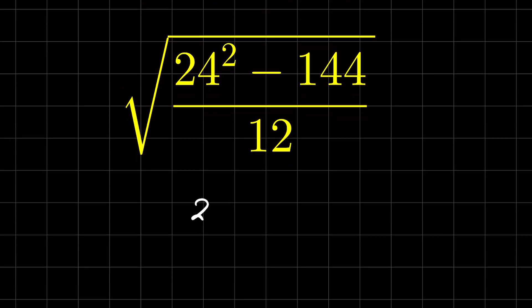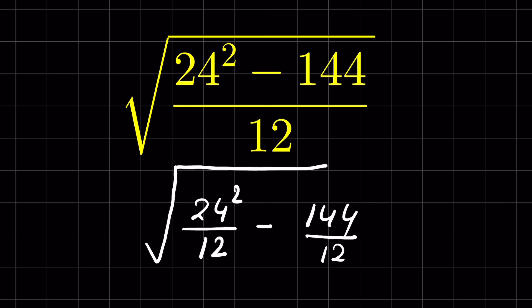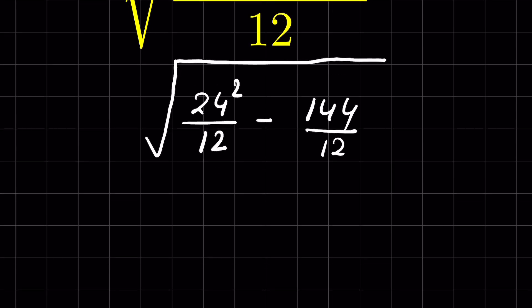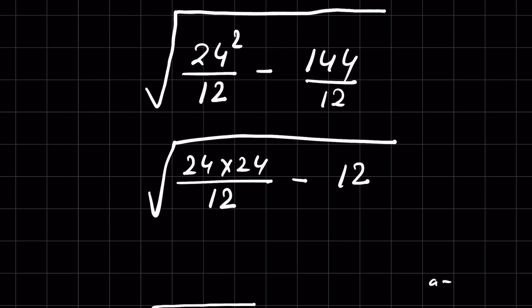Another method is we write 24 square minus 144 upon 12 as 24 square upon 12 minus 144 upon 12. 12 is the common denominator, so we can write 12 in the denominator for both the numbers. Now 24 square upon 12 means 24 times 24 upon 12, minus 144 upon 12. We can divide 144 by 12, so it will be 12 under square root.